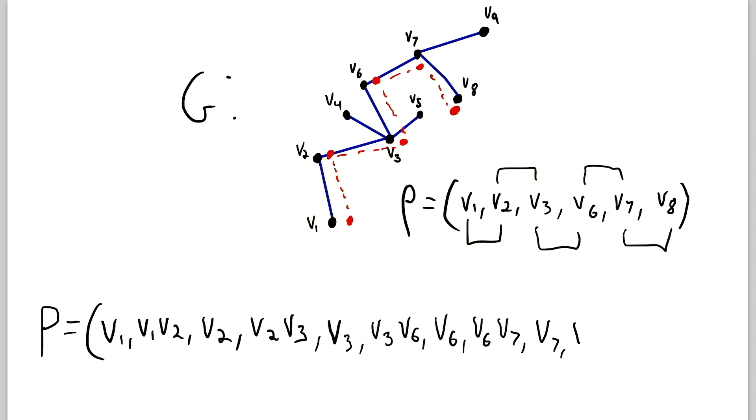Then we were at V7. We traversed the edge V7, V8. And then of course we ended at V8. So if you write a path, trail, or a walk in this way, it's a sequence of alternating vertices and edges. It begins with a vertex, and it ends with a vertex.